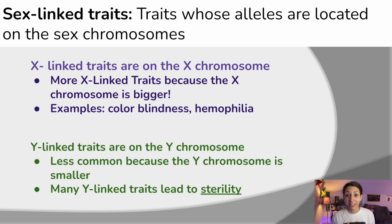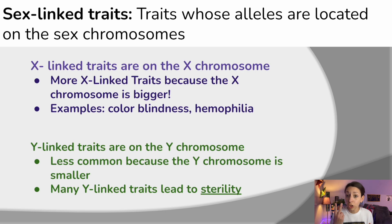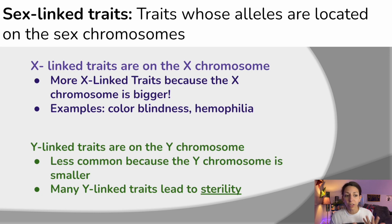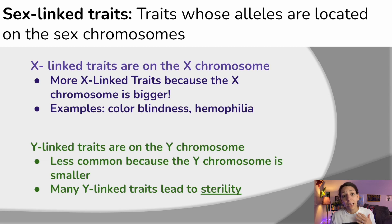Let's move ahead to talk about sex-linked traits, another different type of inheritance seen in humans. These are traits that have alleles located on sex chromosomes. In a human karyotype there are 23 pairs, so 46 total chromosomes, and two of those are sex chromosomes. In biological females it's XX; in biological males it's XY. If something is an X-linked trait, it appears on the X chromosome. Color blindness is a very common X-linked recessive trait, as is hemophilia. Y-linked traits are fewer because the Y chromosome is smaller, and many Y-linked traits actually lead to sterility, meaning they cannot be passed on to offspring.